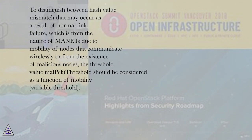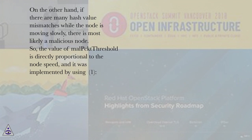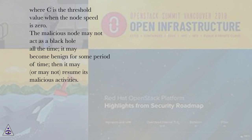To distinguish between hash value mismatches that may occur as a result of normal link failure — which is inherent due to mobility of nodes communicating wirelessly — or from the existence of malicious nodes, the threshold value mal_pckt_threshold should be considered as a function of mobility, i.e., a variable threshold. If the node is moving with relatively high speed, the mismatch of hash values is most likely due to normal link failure, and so the threshold should be high. On the other hand, if there are many hash value mismatches while the node is moving slowly, there is most likely a malicious node. So, the value of mal_pckt_threshold is directly proportional to the node speed, and it was implemented using equation 1, where c is the threshold value when the node speed is 0.